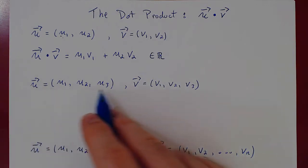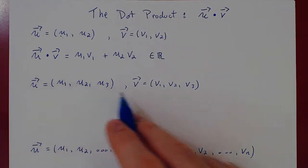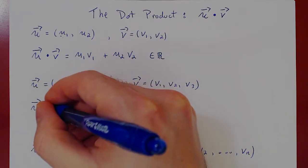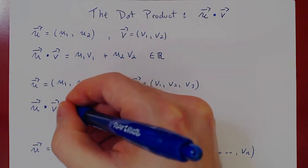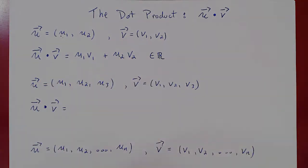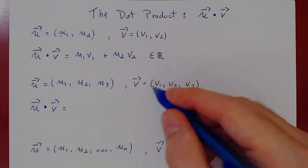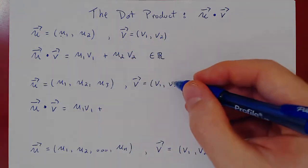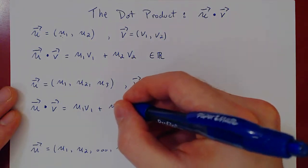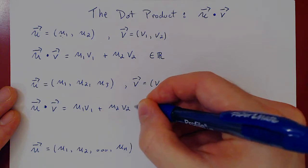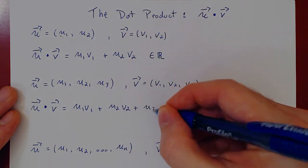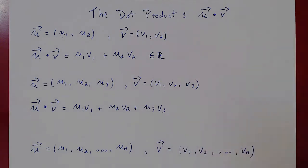Of course, if you have vectors in R3 with three components, it's naturally the same thing. You find u dotted with v by doing the first entry of u times the first entry of v, u1 times v1, plus the second entry of u times the second entry of v, u2 times v2, plus the third entry of u times the third entry of v. All we did was multiply corresponding entries and add them up.